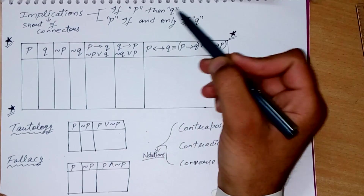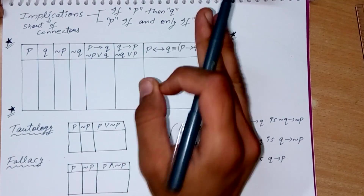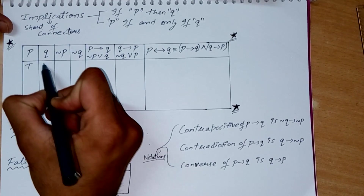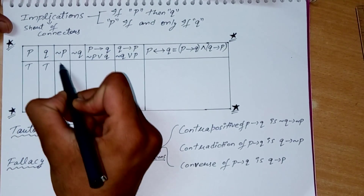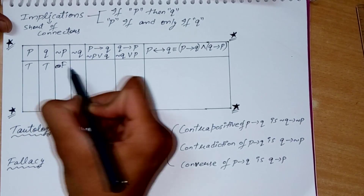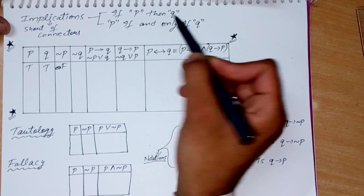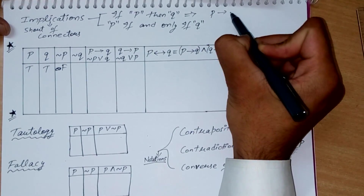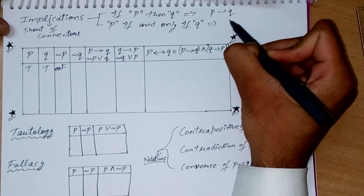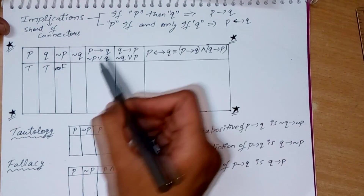There are two kinds of implications: P implies Q (if P then Q), and P if and only if Q. These are important connectors. When P is true and Q is true, negation of P is false. P implies Q is represented as P→Q, and P if and only if Q is represented as P↔Q.